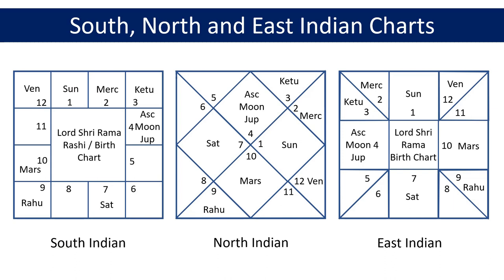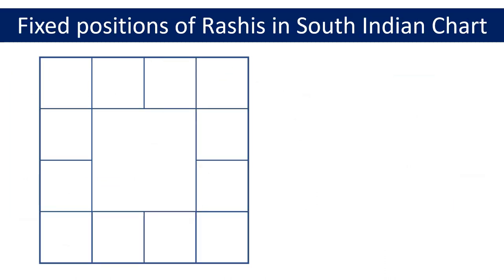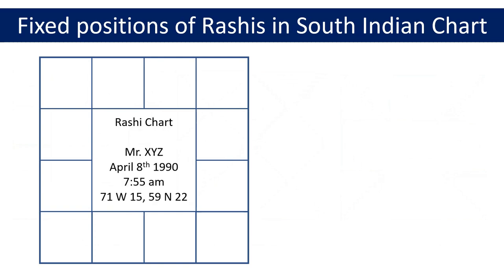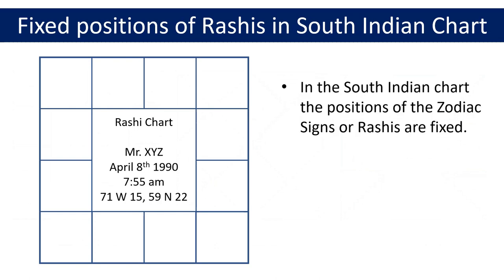Let's now focus on positions of zodiac signs or Rashis in the South Indian chart. The square in the middle of the chart is typically used to provide information such as the type of chart, the name of the person, the date and time of birth, and the longitude and latitude of the place of birth. The most important thing to be aware of is that the positions of the zodiac signs or Rashis are fixed in the South Indian chart.